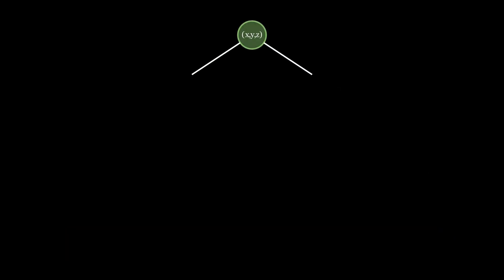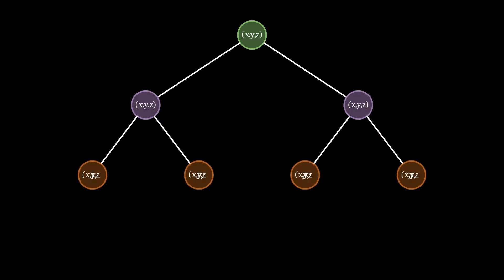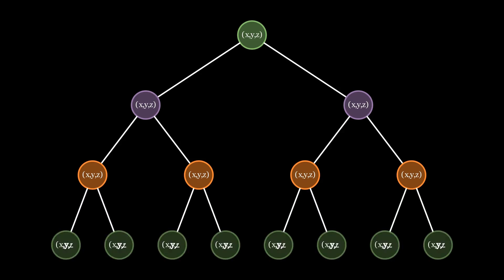If we are given a set of points in a three-dimensional plane, we would split along the x-axis, then the y-axis, then the z-axis, repeating these three dimensions every three layers. As you could imagine, we could do this for any set of k-dimensional data.